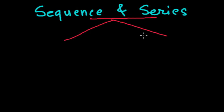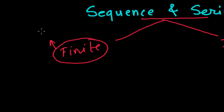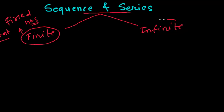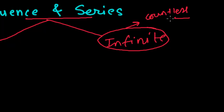Sequence and series are of two types. One is called finite and another is called infinite. From the name itself it is known — finite means there is a fixed number of terms, we can count them. But infinite means we cannot count the terms; there are countless number of terms, they are not fixed.